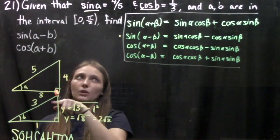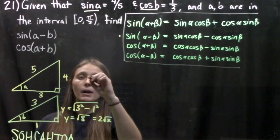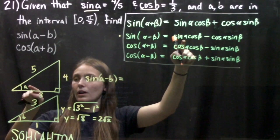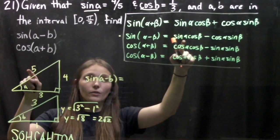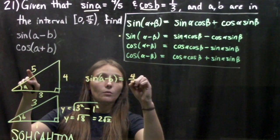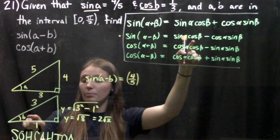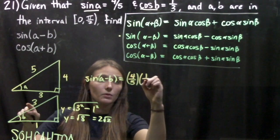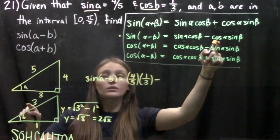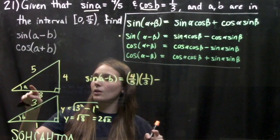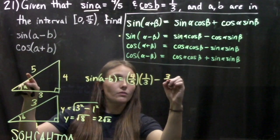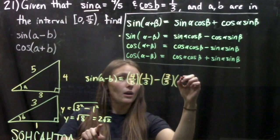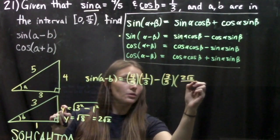Now we find sine of A minus B using our formula. Sine of A is opposite over hypotenuse, which is 4/5. Cosine of B is adjacent over hypotenuse, which is 1/3. So we have 4/5 times 1/3. Then we subtract cosine of A, which is adjacent over hypotenuse — 3/5 — times sine of B, which is opposite over hypotenuse — 2√2 over 3.